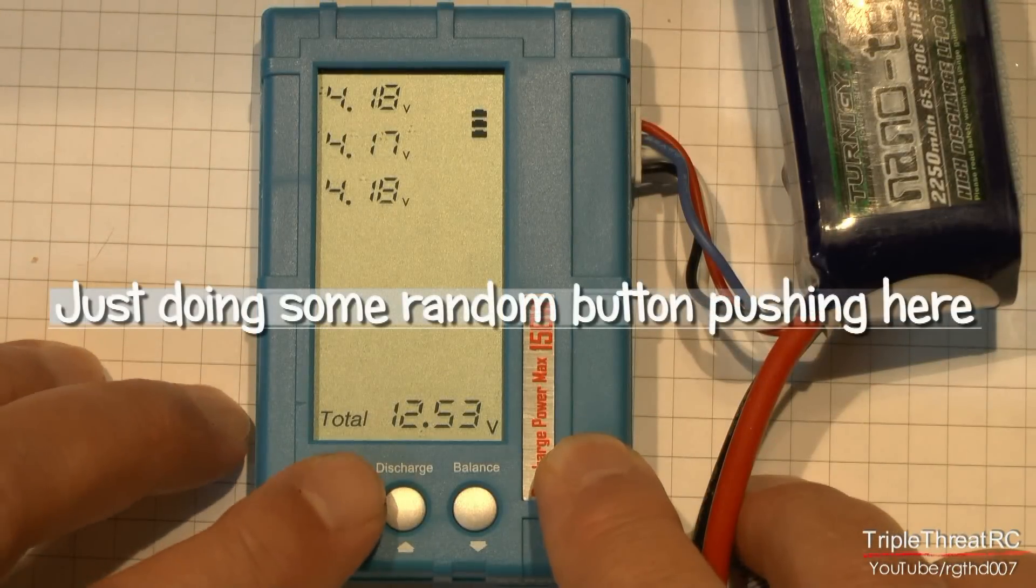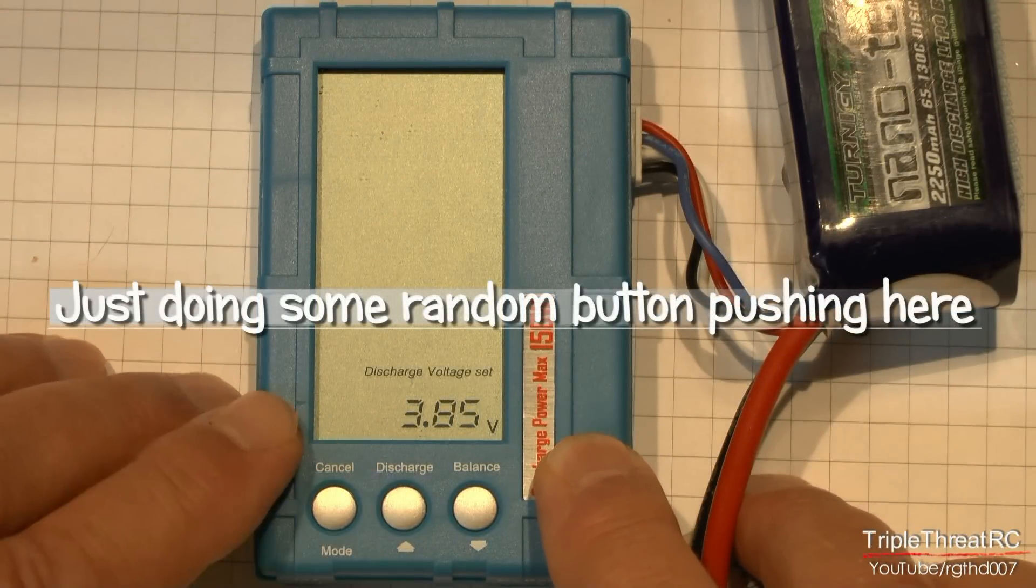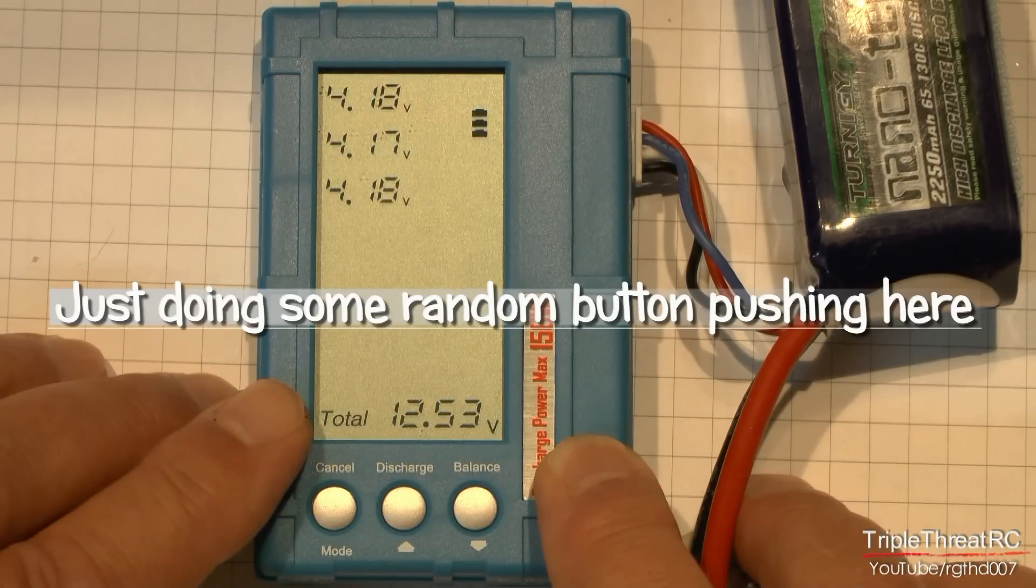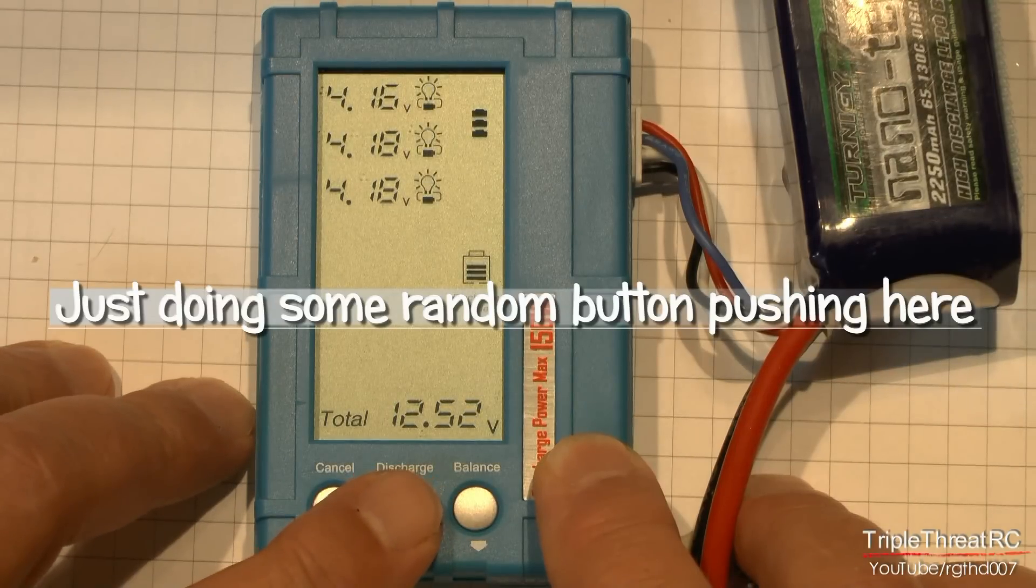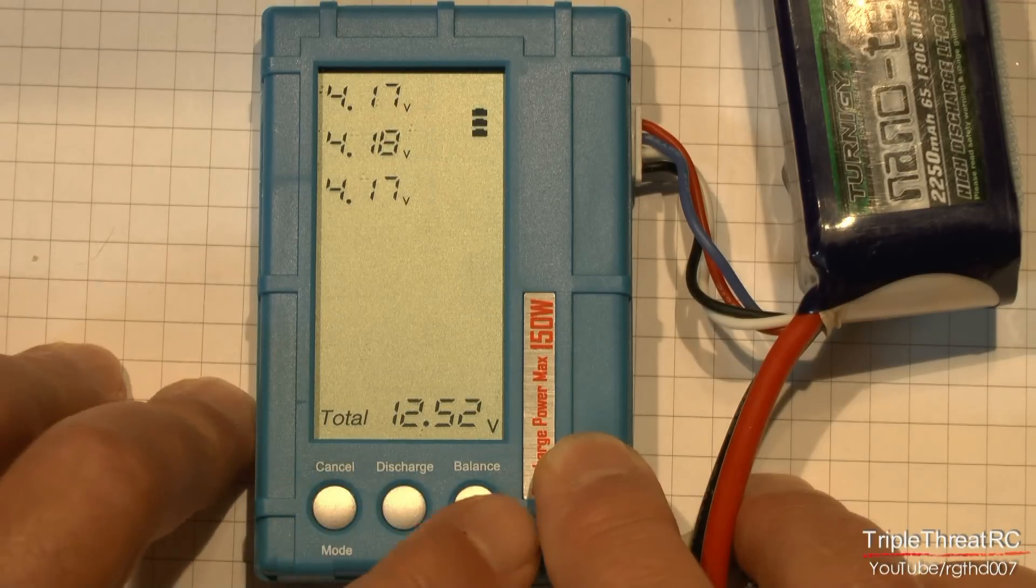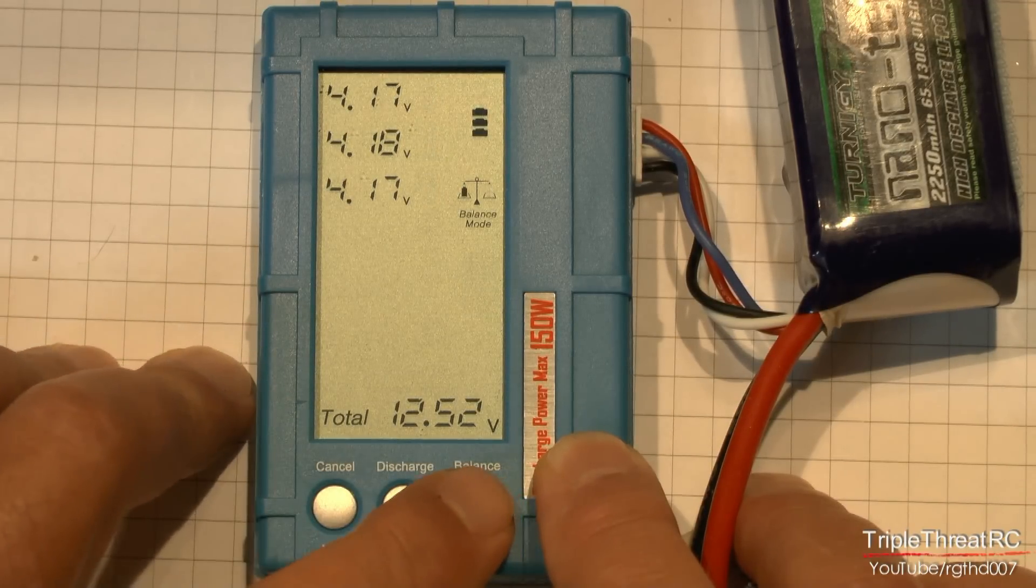With just the three buttons, this unit is very easy to get the hang of very quickly. And again, to review its functions: its first role is a voltage checker, its second role is a battery balancer or lipo balancer and it'll take care of balancing your packs, the third role is the one that I bought it for, which is its discharge function.